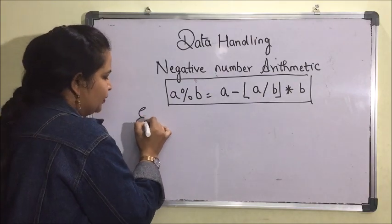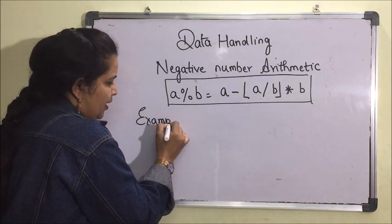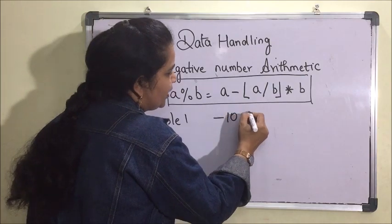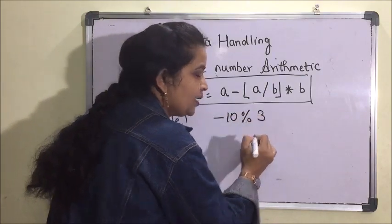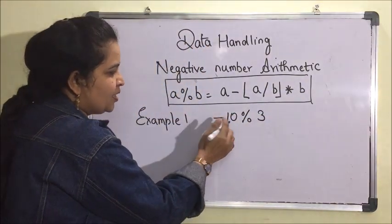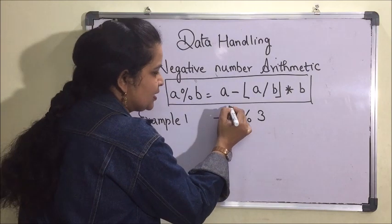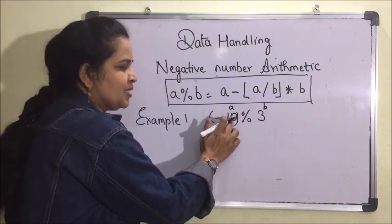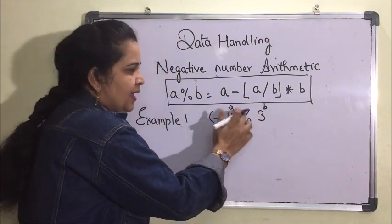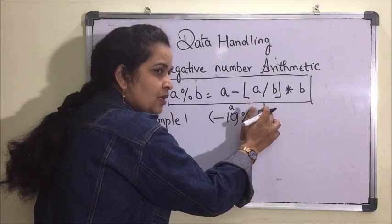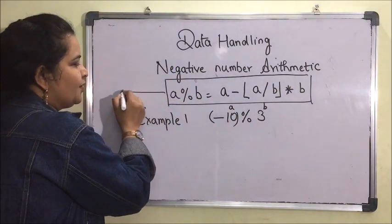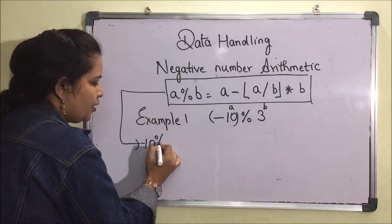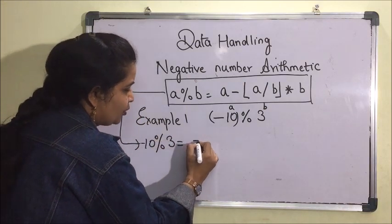Now let's take Example 1. Suppose I want to evaluate minus 10 mod 3. Here, a is minus 10 and b is 3. So: minus 10 mod 3 = minus 10 minus floor(minus 10 divided by 3) multiplied by 3.